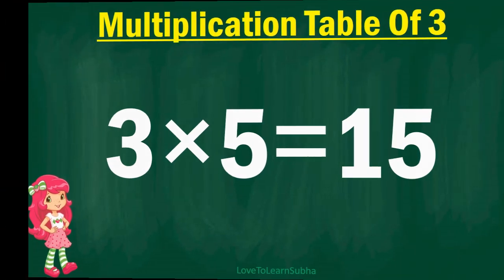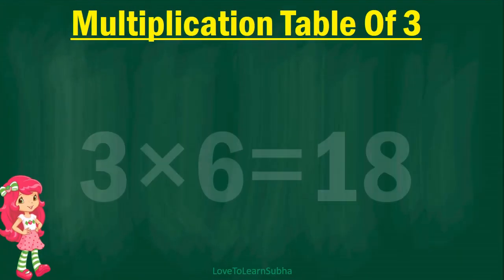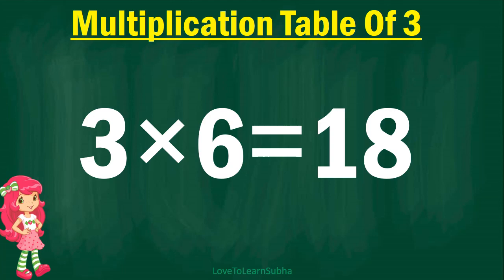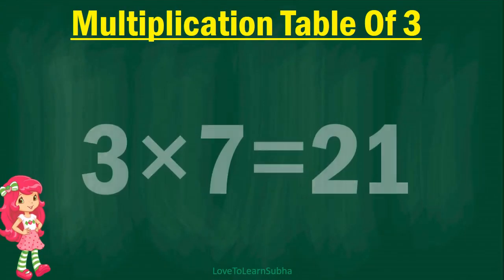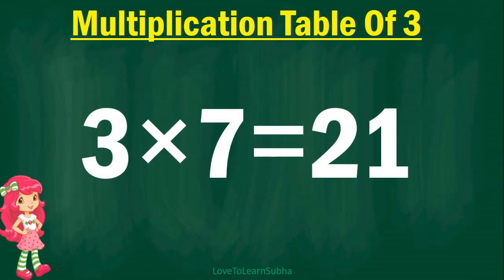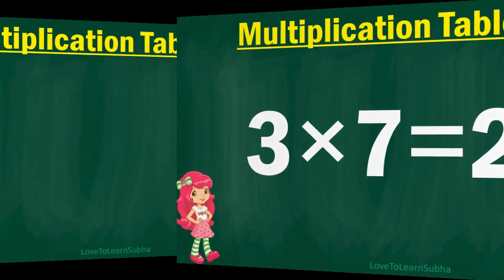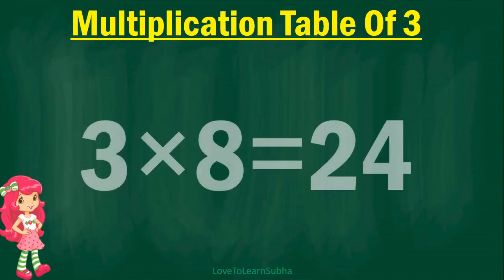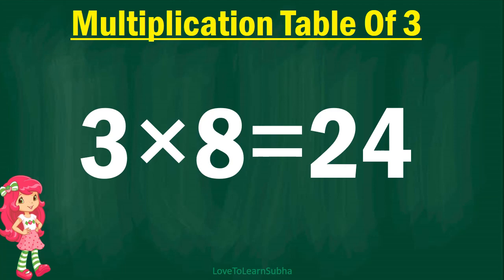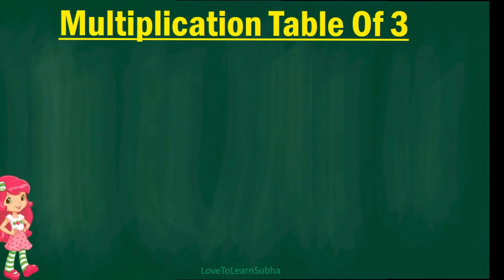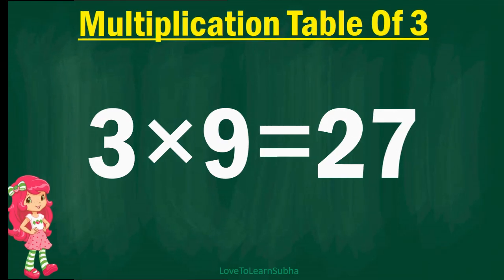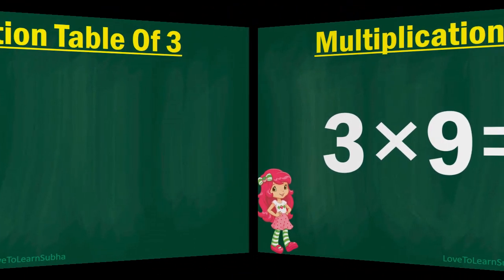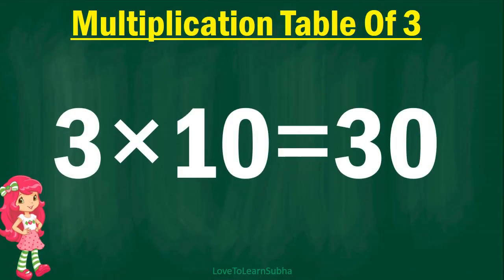3 6s are 18, 3 7s are 21, 3 8s are 24, 3 9s are 27, 3 10s are 30.